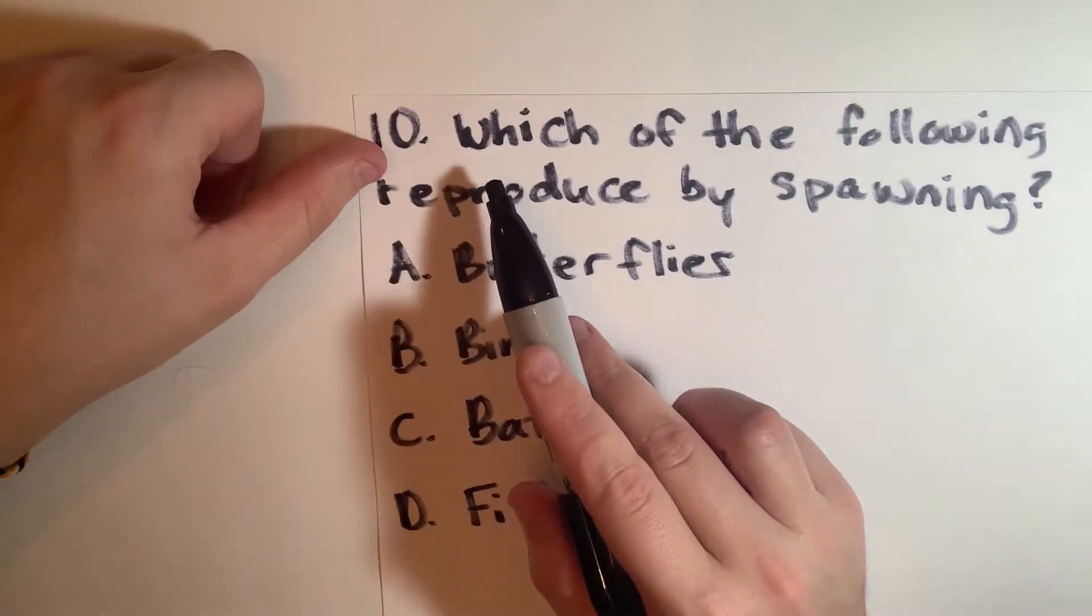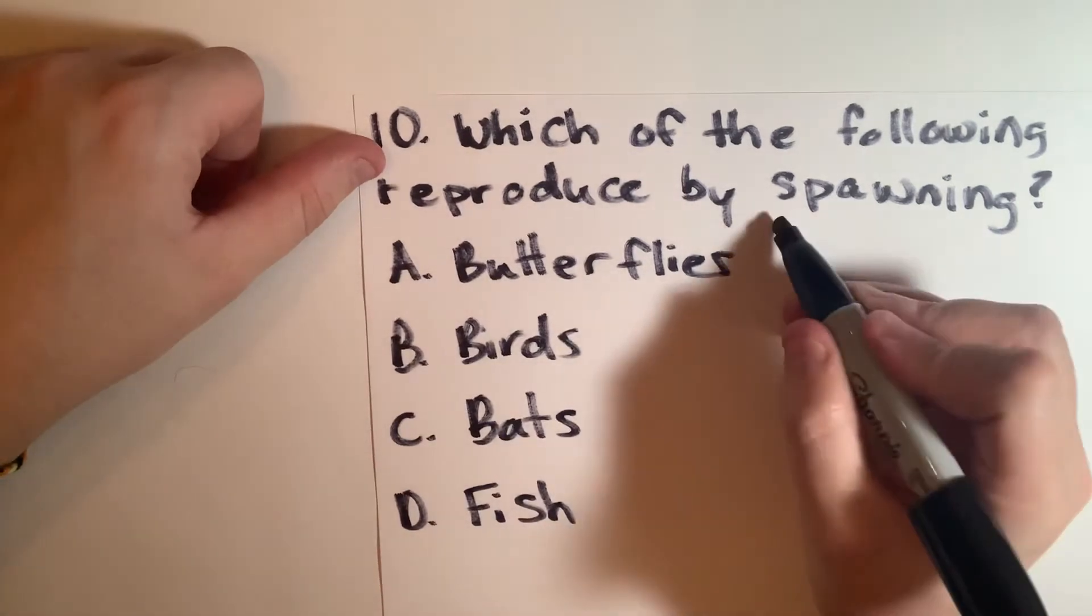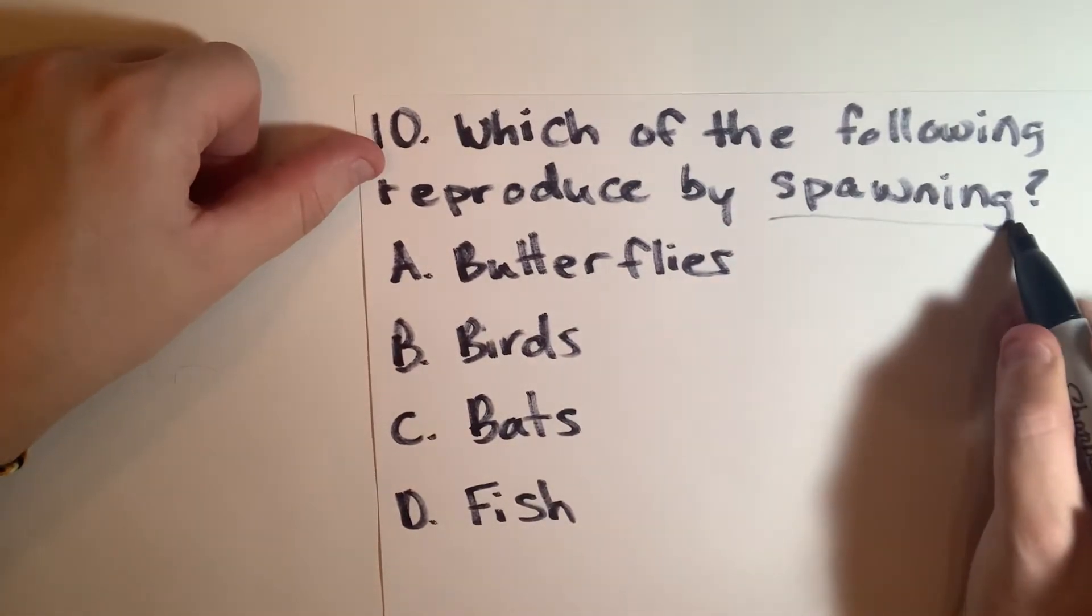For number 10 it says which of the following reproduce by spawning. Now the word spawning has to do with eggs.